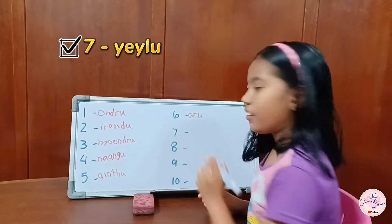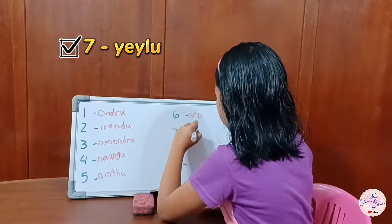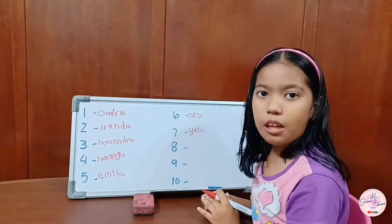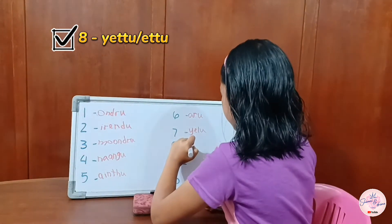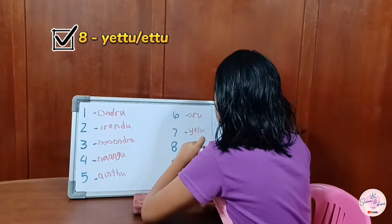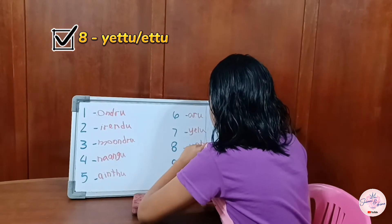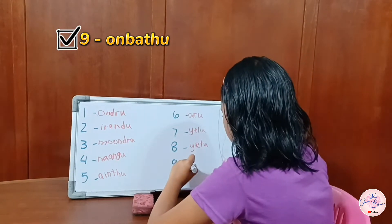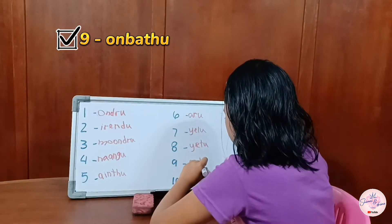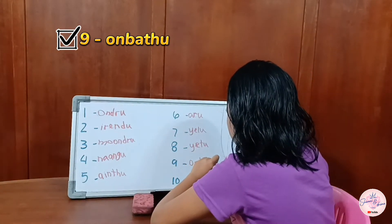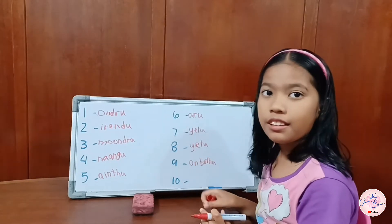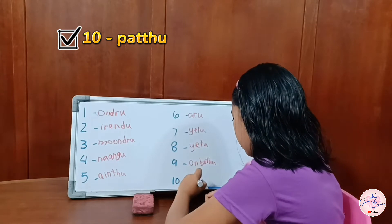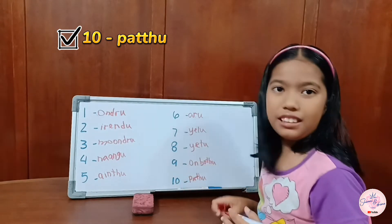Six in Tamil is ondru. Seven in Tamil is yel. Eight in Tamil is yeddu. Nine in Tamil is ondru. Ten in Tamil is patdru.